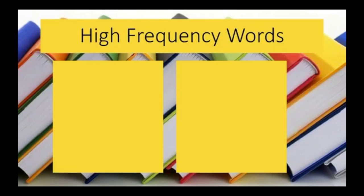With our high frequency words, we like to look at each word so that we can determine how to spell them. Our first word is color. Spell this for yourself — tap it on the table as you say the letters, spell it out, and come up with a sentence. C-O-L-O-R. Write it out.